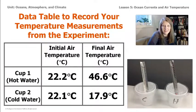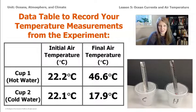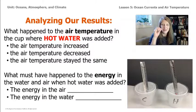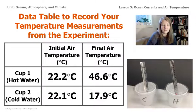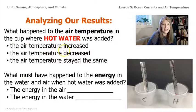Let's try to figure out what this means. What happened to the air temperature in the cup where hot water was added? There are three choices — think about this, maybe pause the video or talk with your partner. Did the air temperature increase, decrease, or stay the same? Looking at our results: the cup with hot water started at 22.2 degrees Celsius, but after two minutes it had risen all the way to 46.6 degrees — that's an increase of about 24 degrees Celsius. So we can say with confidence that the air temperature increased when hot water was added.